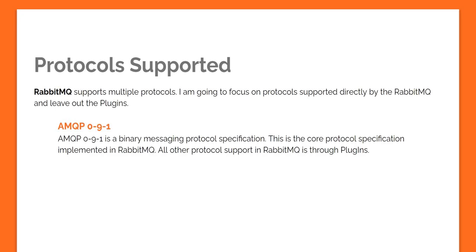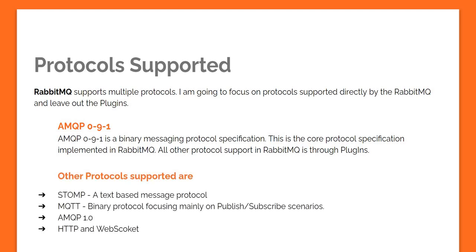What are the protocols supported by RabbitMQ? RabbitMQ supports multiple protocols but the main protocol which comes out of the box is AMQP 0-9-1 — that's the protocol we'll use in the demo. There are multiple other protocols supported through plugins: STOMP, which is a text-based message protocol; MQTT, which is a binary protocol focusing mainly on publish-subscribe scenarios; AMQP 1.0, which is not necessarily an upgrade from AMQP 0-9-1 but is completely different and much more complex, and not supported by most clients; and lastly HTTP and WebSocket.